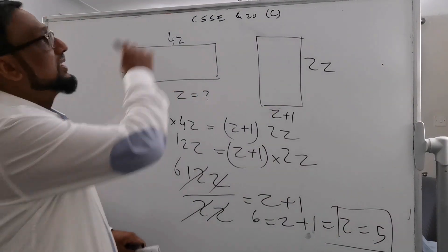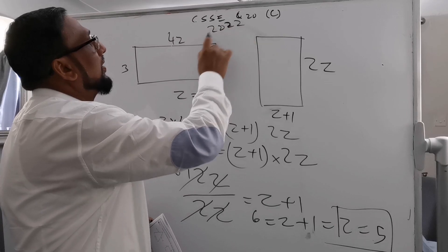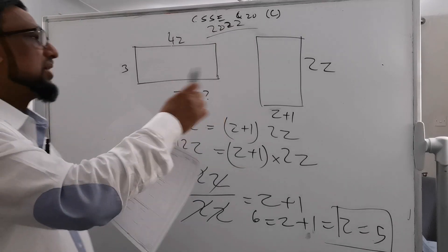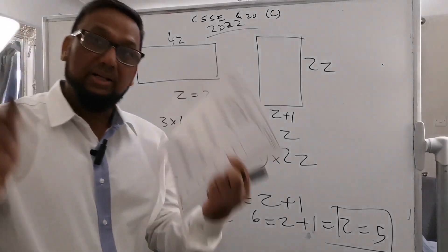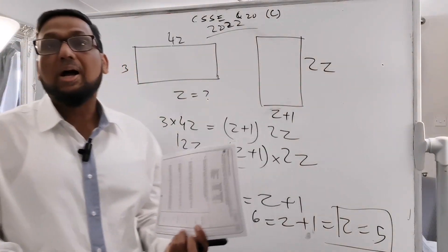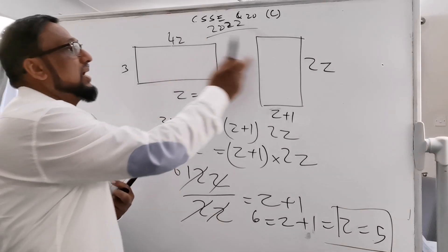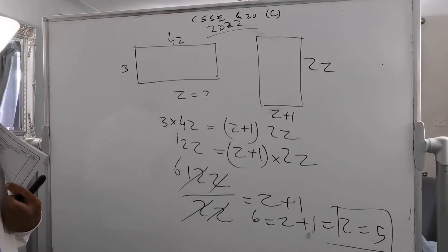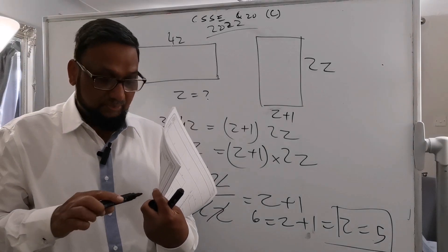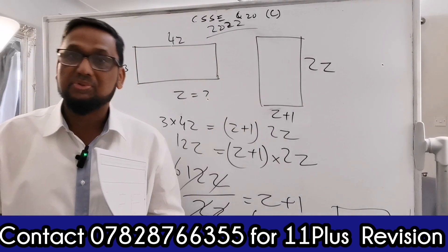So that's the CSS exam 2022 question 20. Part A was about perimeters being equal to find x. Part B was about areas of two rectangles being equal to find y. Part C also used equal areas to find z. If you need any help with 11 plus preparation, don't hesitate to contact me. Subscribe to the channel and I'll see you in the next video — take care, bye-bye.